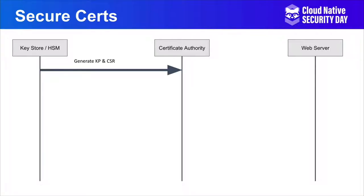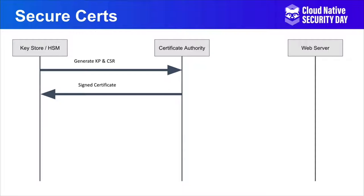On your device, you generate your key pair and a certificate signing request. The certificate signing request is then sent to the certificate authority — not your private key, just your certificate signing request. That contains a public key as well as some additional metadata information for your CA. The CA signs it with its private key and sends back that certificate. You then install that directly into your key store or hardware security module.